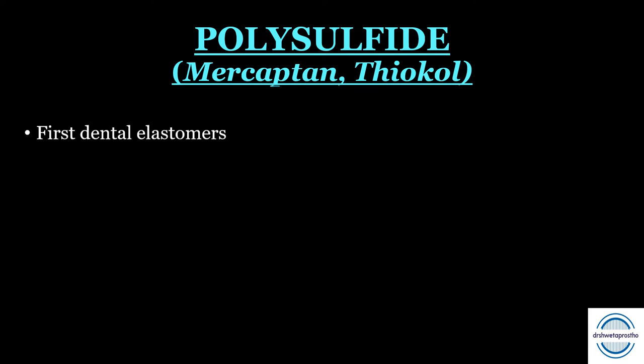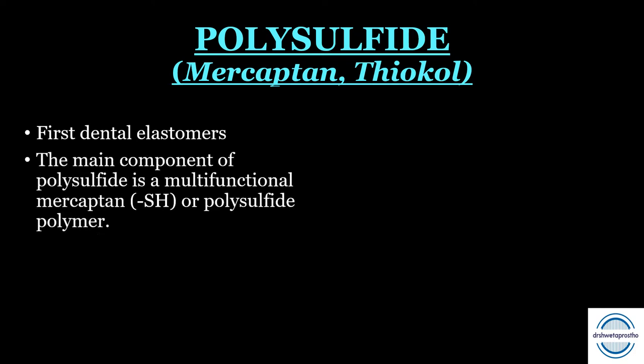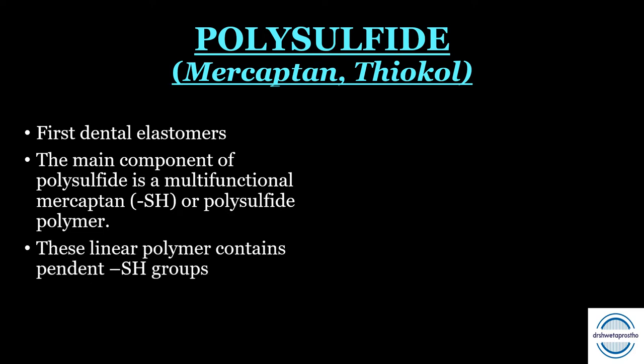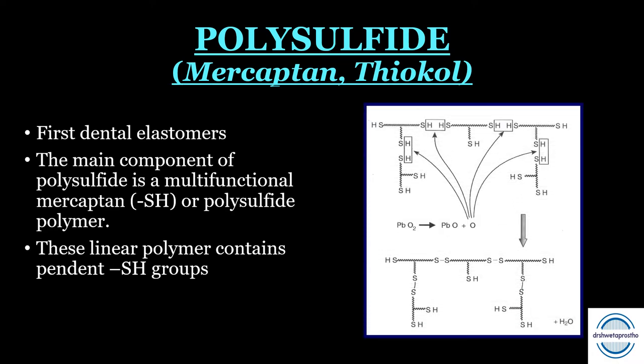Polysulfides, also called mercaptan or thiocol, were the first rubber-based impression materials introduced in dentistry. They were introduced after the hydrocolloids because they were more flexible and more resistant to tearing compared to agar and alginate. The main component is the multifunctional mercaptan — the SH group or the polysulfide polymer — which is a linear polymer containing pendant SH groups.